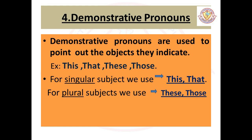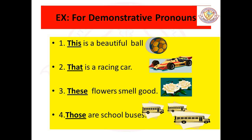Fourth, demonstrative pronouns. Demonstrative pronouns are used to point out the objects they indicate. The examples are: this, that, these, those. For singular subjects we use 'this' and 'that'; for plural subjects we use 'these' and 'those'. Examples: 'This is a beautiful ball.' 'That is a racing car.' 'These flowers smell good.' 'Those are school buses.' So 'this' and 'that' are demonstrative pronouns used for singular, while 'these' and 'those' are used for plurals.